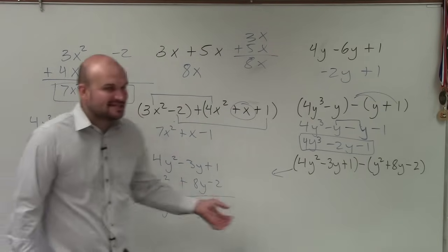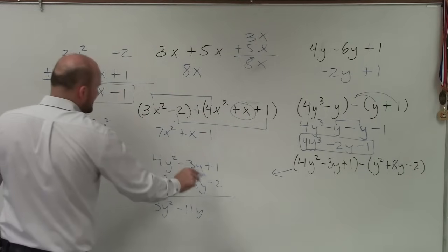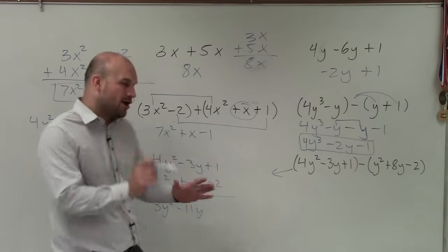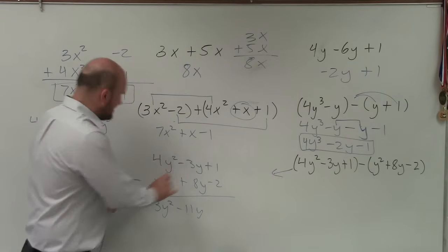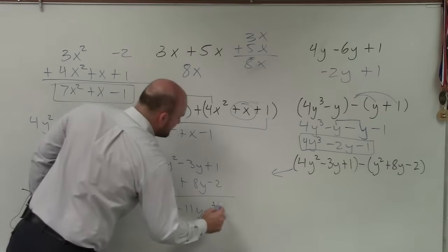And then the reason why this gets tricky is because when you have a negative down here, 1 minus a negative 2. A lot of students will just do, oh, 1 minus 2 is negative 1. No. It's 1 minus a negative 2. So if I did 1 minus a negative 2, you can see that that's a double negative. So I have positive 3.